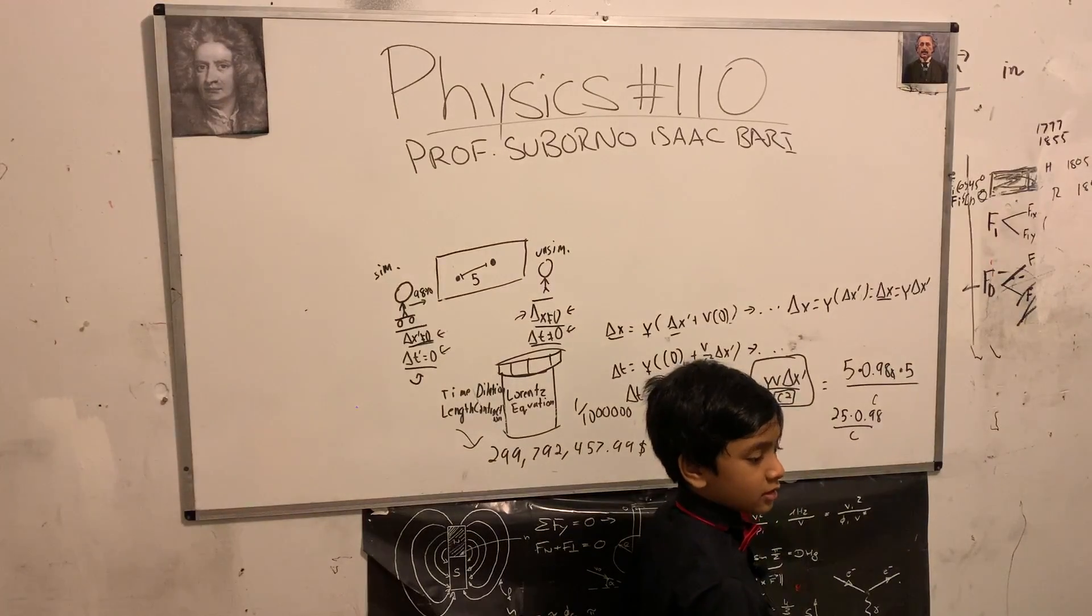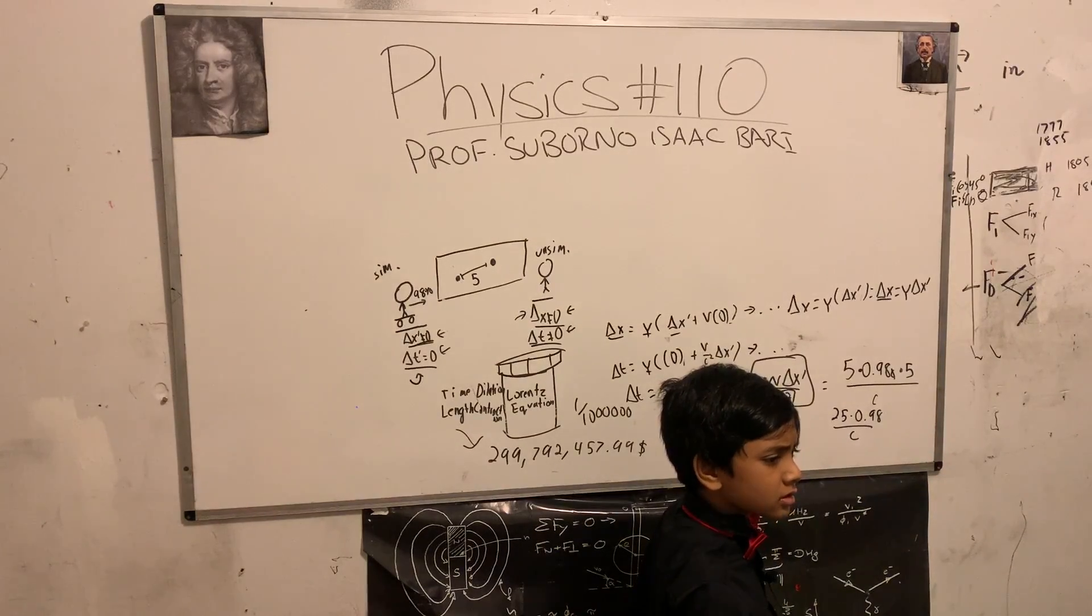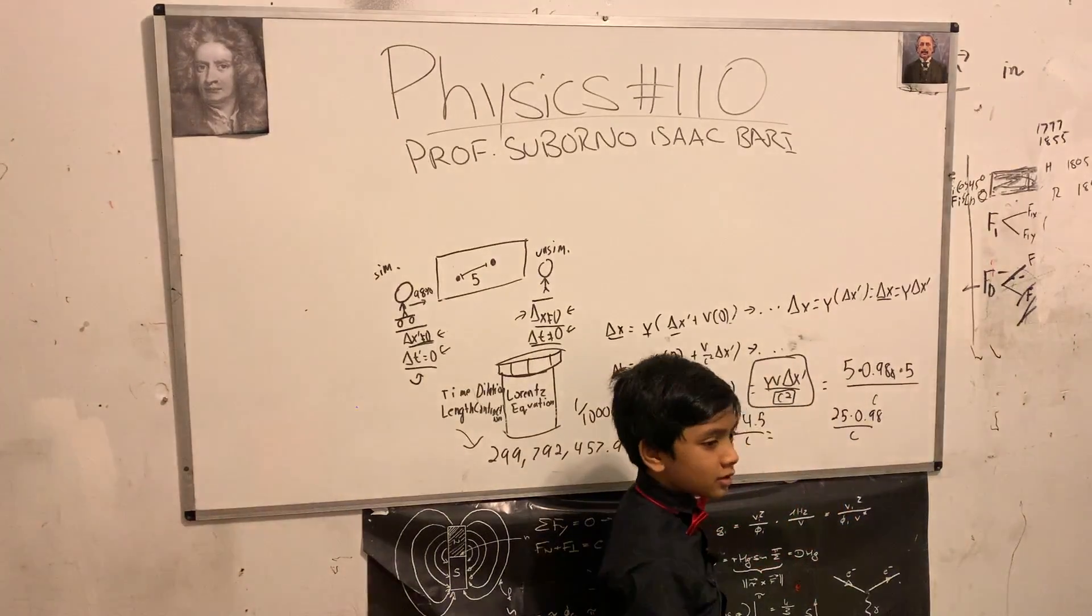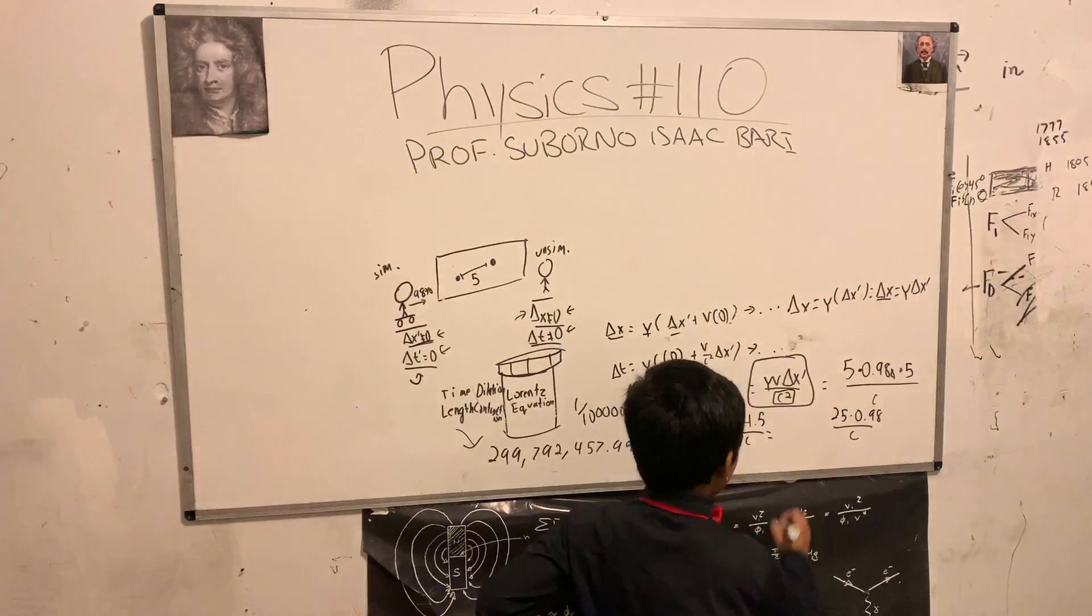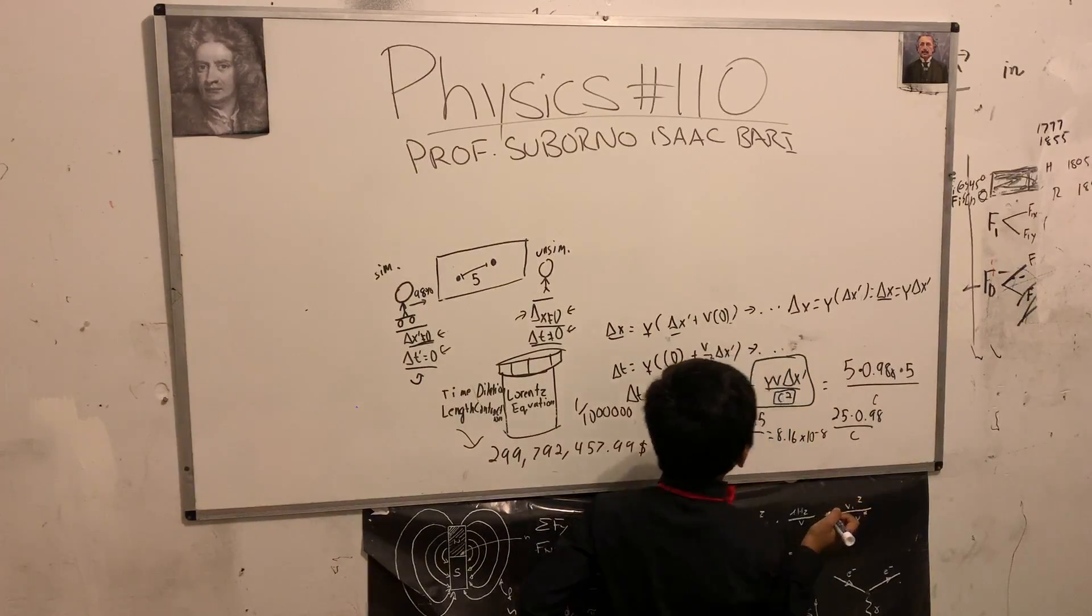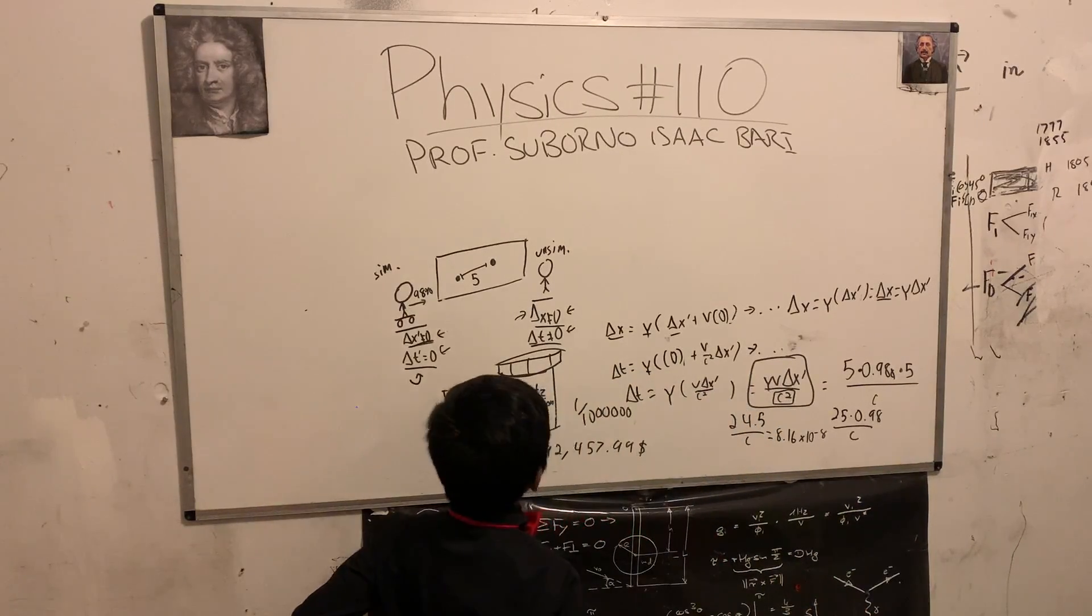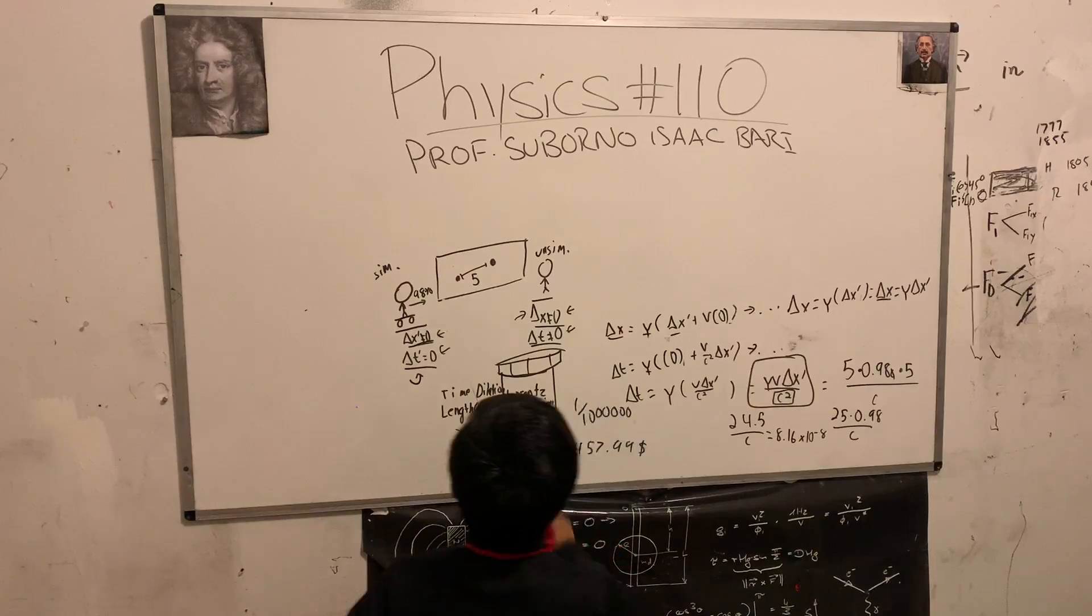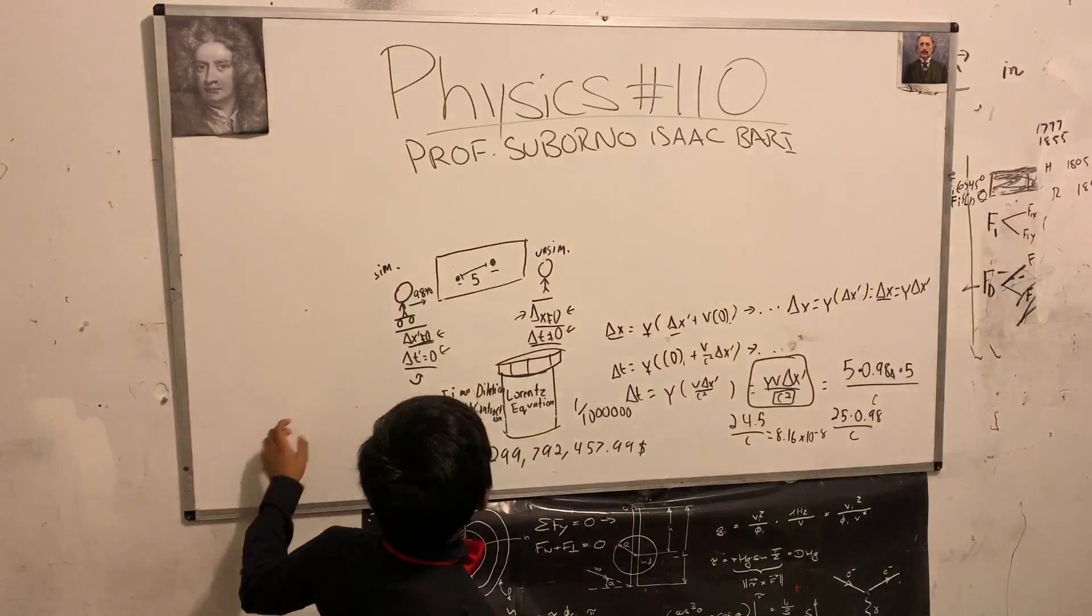So that gives us 24.5 over c. What's 24.5 over 299 million 792,458? Yeah, just c, so 3 times 10 to the 8. That's the difference between the time - this is the difference between the events happening.